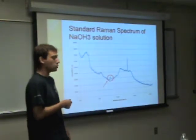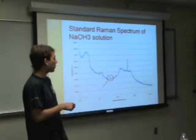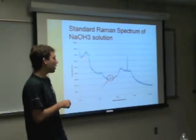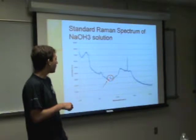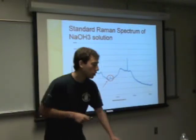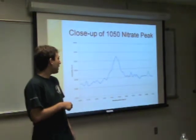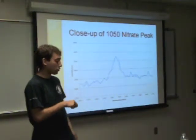Just to recap, this is what the actual spectrum for a typical sample looks like. There's a lot here. This right here we are pretty sure is background from the Raman spectrum of the lens used to collect the laser, and the rest is just background from a generic sample of water or the PPCM tube. What we really care about is this little peak that occurs at around 1050 — the Raman peak associated with nitrate in the sodium nitrate solution.